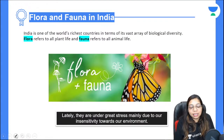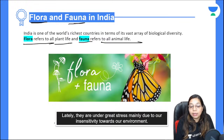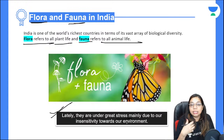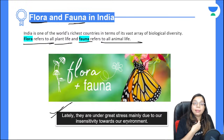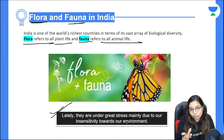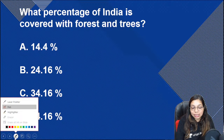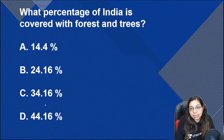Flora refers to the plant life, and fauna refers to the animal life. Lately they are under great stress, mainly due to our insensitivity towards the environment. We have put animals and plants under stress, which is not good. Our activities should be carried out more sensitively so that plants and animals can coexist with humans.